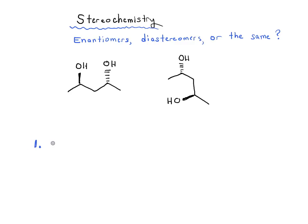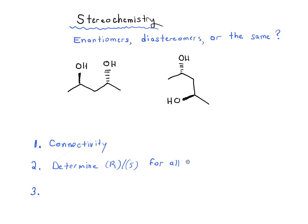Previously we said that there's really a three-step process to answering a question like this. Number one is you want to look for the connectivity — compare the connectivity of each of the two molecules. The second thing is to determine R and S for all stereocenters. And the last thing is you want to double-check symmetry.